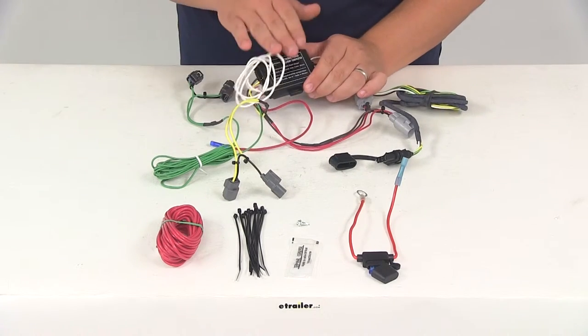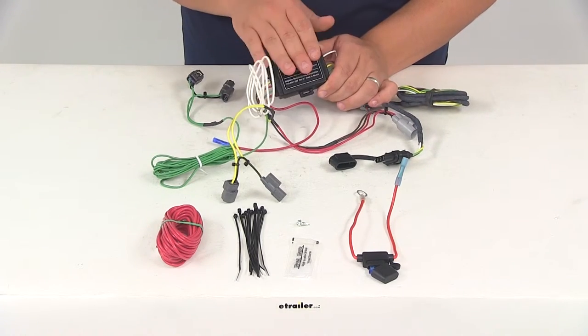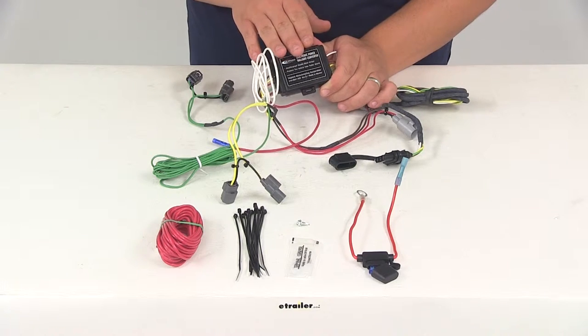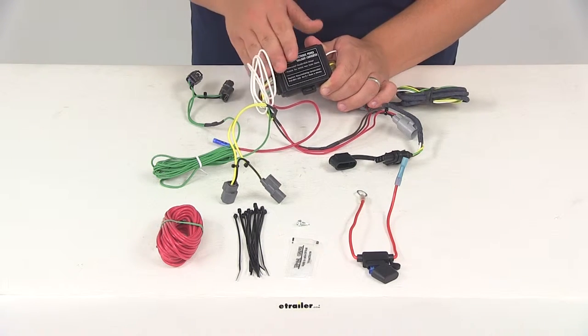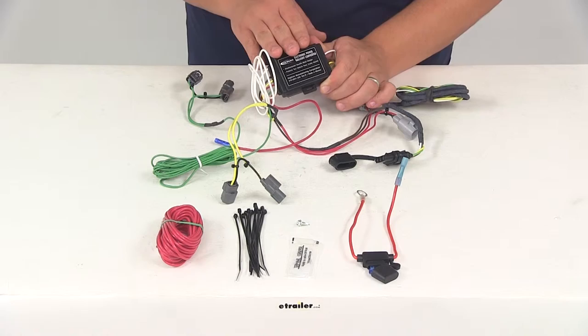It's going to include your tail light converter. This is going to ensure that your vehicle's wiring matches out of your trailers. This is going to connect directly to the vehicle battery through the wiring to avoid overloading the vehicle's electrical system.